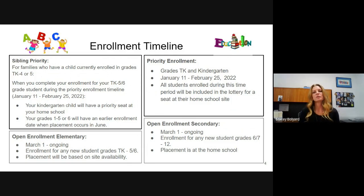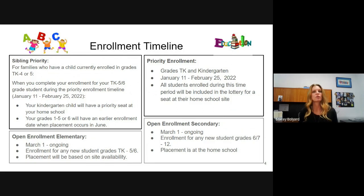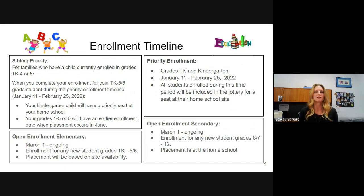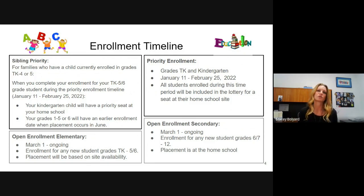Priority enrollment is for new students with no siblings already in elementary school, or whose siblings are in high school or middle school. The priority enrollment window is January 11th to February 25th, and this is for grades TK and kindergarten only. Students who enroll during this time period will be included in the lottery if required for their homeschool site; otherwise they get placement at their homeschool. Importantly, we receive about 2,000 enrollments during this window, so everyone who enrolls has equal priority — it does not help to be the first appointment on January 11th, nor does it hurt to be the last on February 25th. Everyone has equal status during this enrollment window.